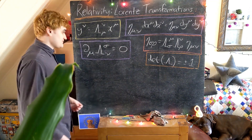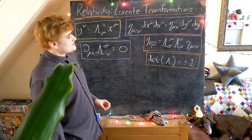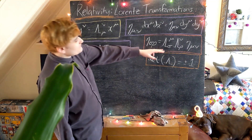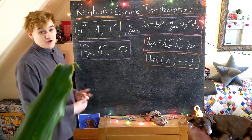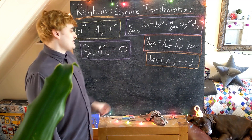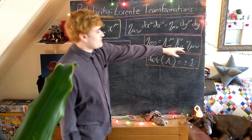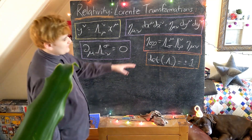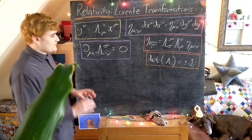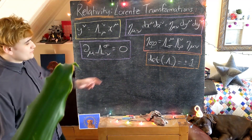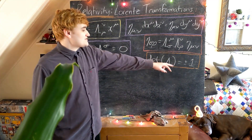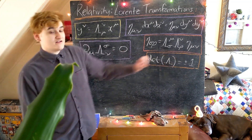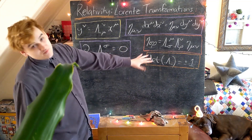The first property is essentially the realization that these lambdas are coordinate transformations, because the formula has the form of the coordinate transformation law for a (0,2) tensor — if we recognize that the lambdas are our Jacobian matrices. This states that the transformation of the metric components into a new coordinate system is just the same as the original metric components. Then by taking the determinant, we found that the determinant squared of the lambda matrix equals 1, so the determinant of a single Lorentz transformation matrix must be plus or minus 1.